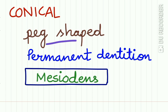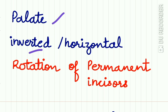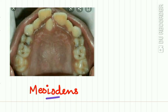The conical kind of supernumerary teeth is mostly peg-shaped, and most supernumerary teeth found in permanent dentition are conical in shape. The commonest example is the mesiodense. Mesiodense, or conical supernumerary teeth, are found high in the palate; they may be inverted or horizontal and may cause rotation or displacement of the permanent incisors, as seen here.